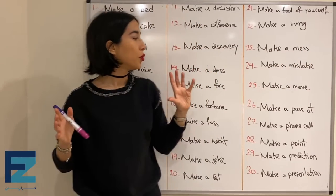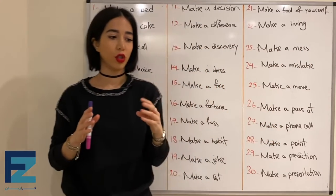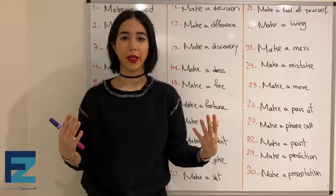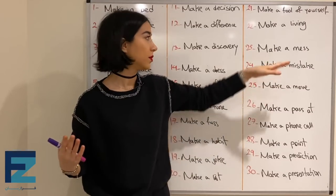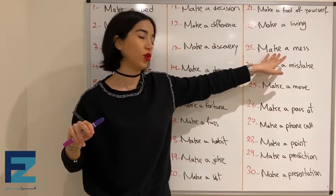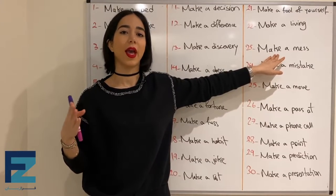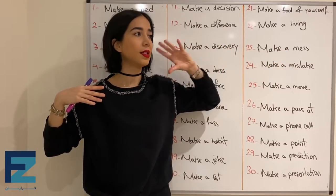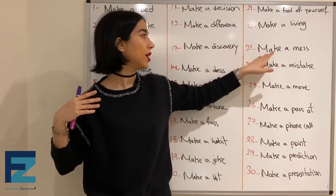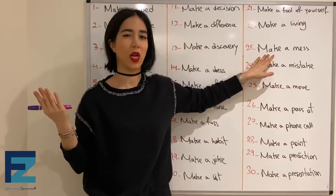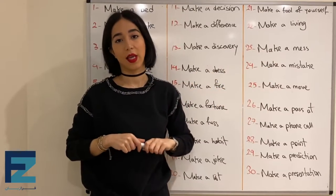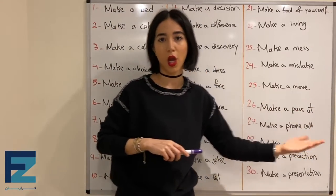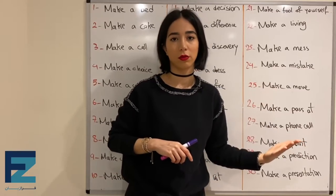Number twenty-three: make a mess. Make a mess means to create a mess, to make a place look untidy, or to ruin something. یک معنیش اینه که به یه چیزی گند بزنی — to ruin something — یا یه جایی رو نامرتب کنی.